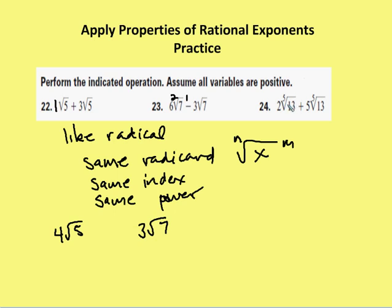Finally, 2 times the fifth root of 13 plus 5 times the fifth root of 13. I have the same index, same radicand, same power, so I end up with 7 times the fifth root of 13.